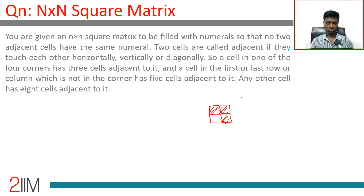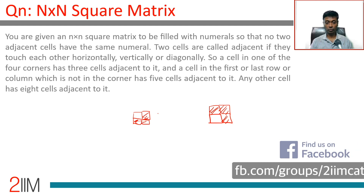A cell in one of the four corners has three cells adjacent to it. A cell in the first or last row or column that is not a corner has five cells adjacent to it. Any other interior cell has eight cells adjacent to it. So the adjacency is very clearly defined.